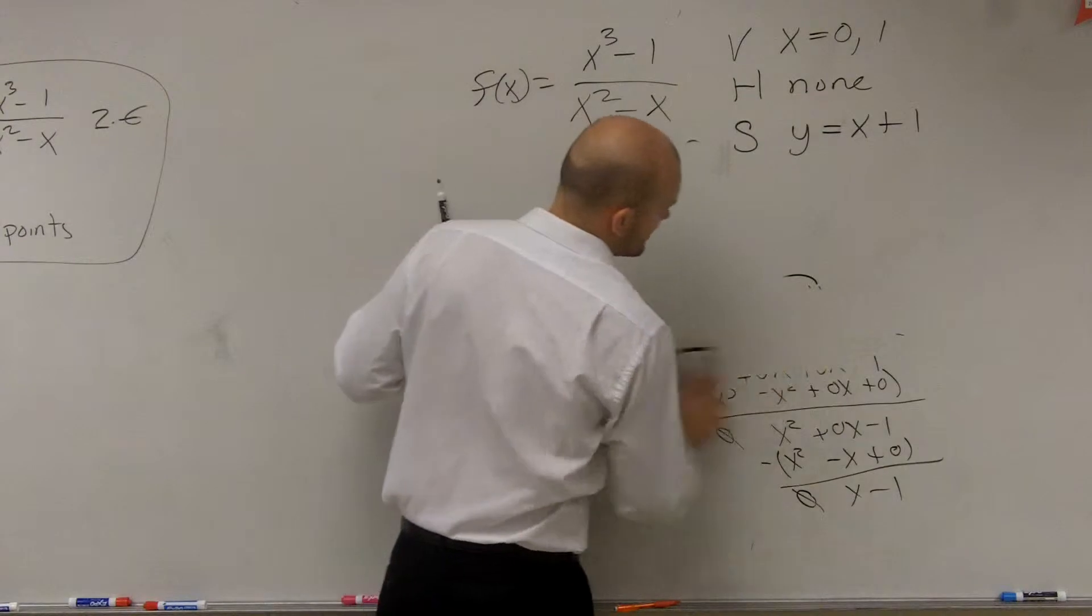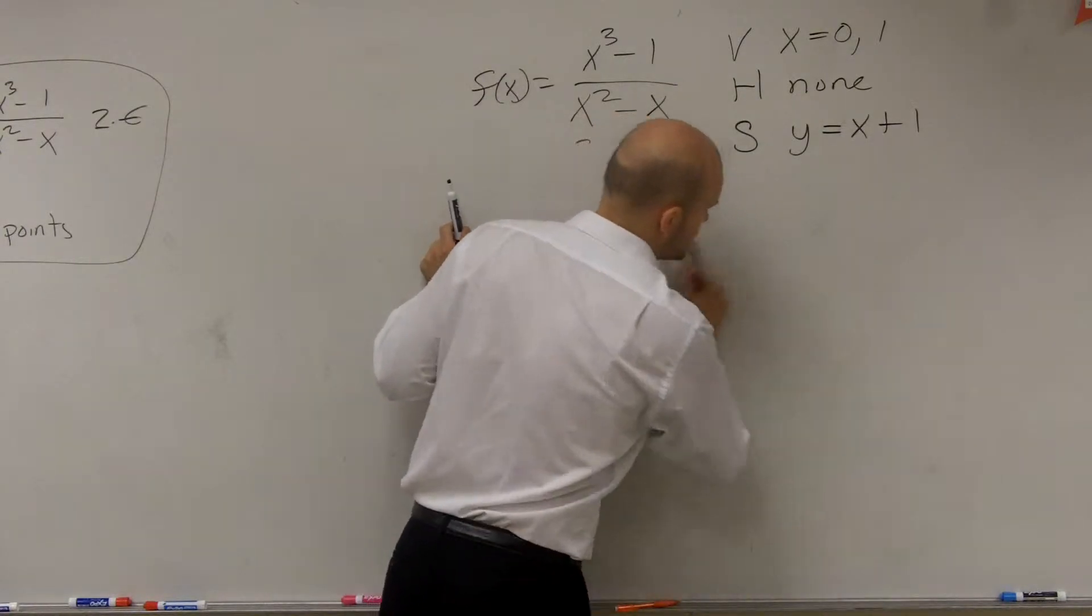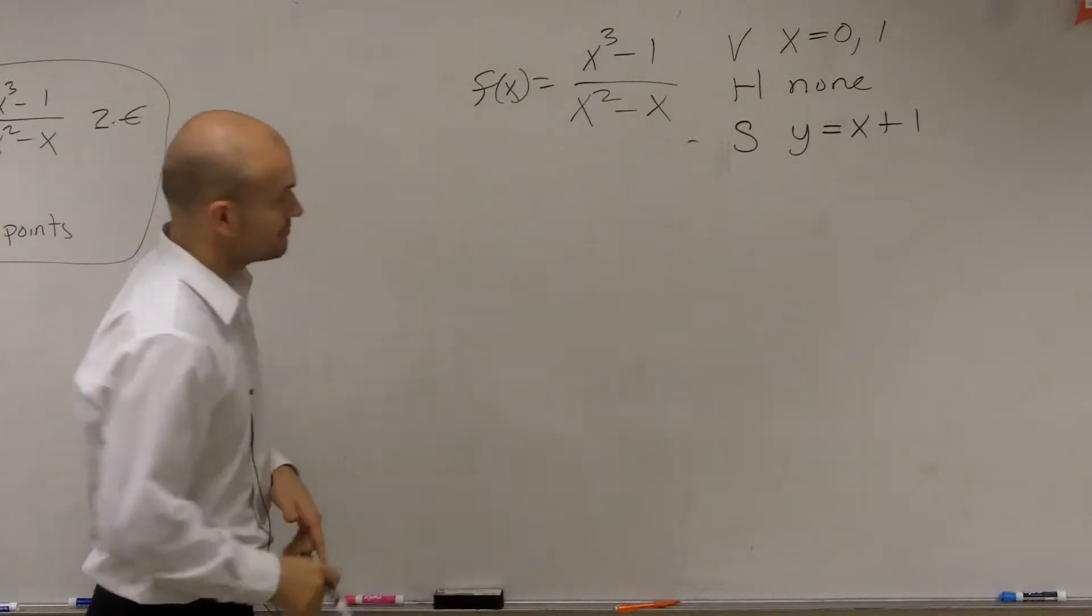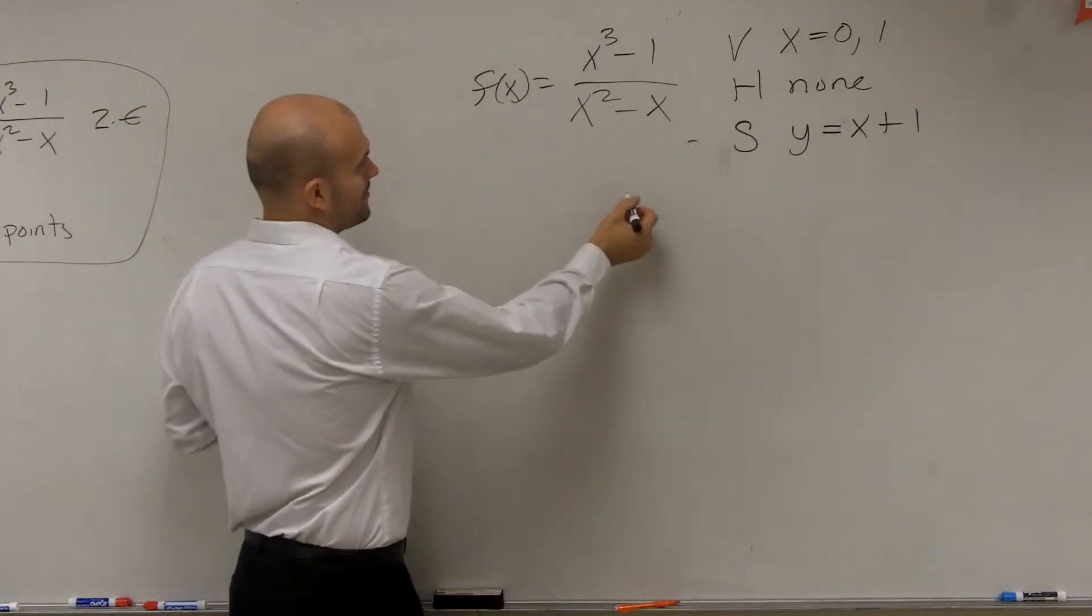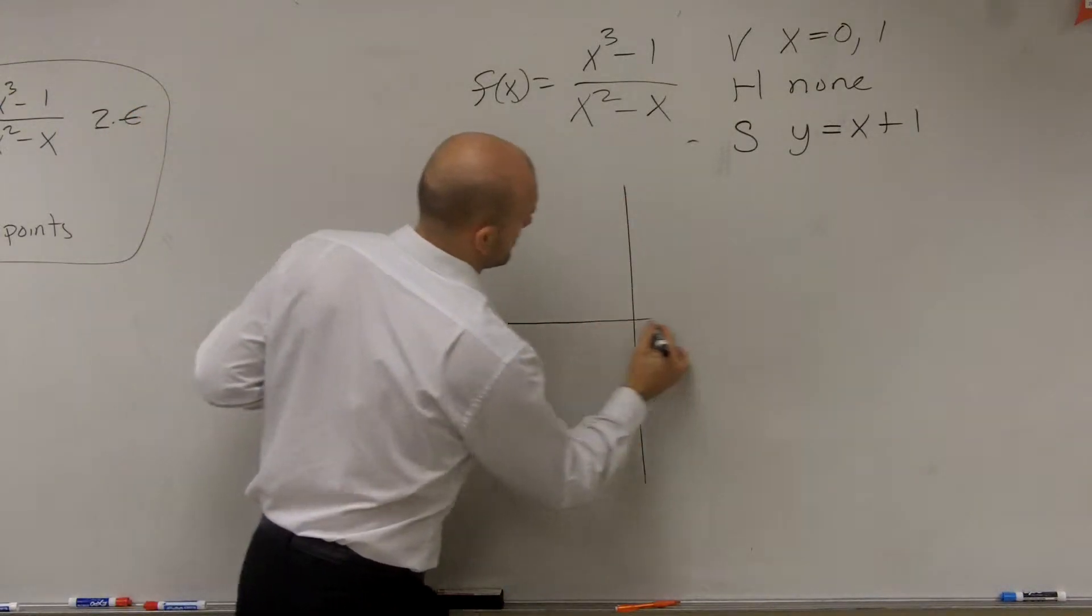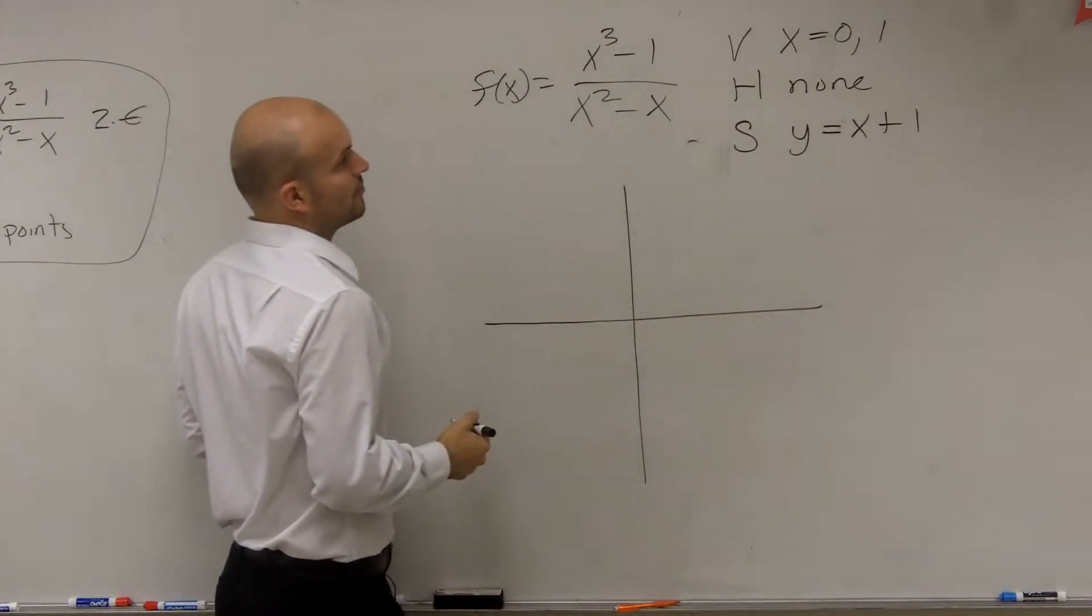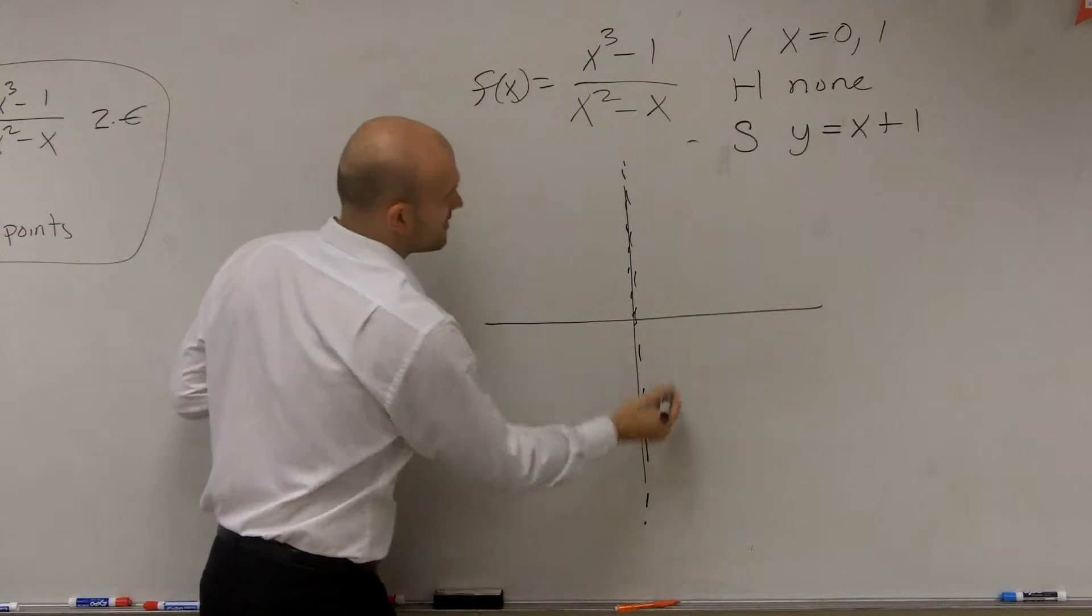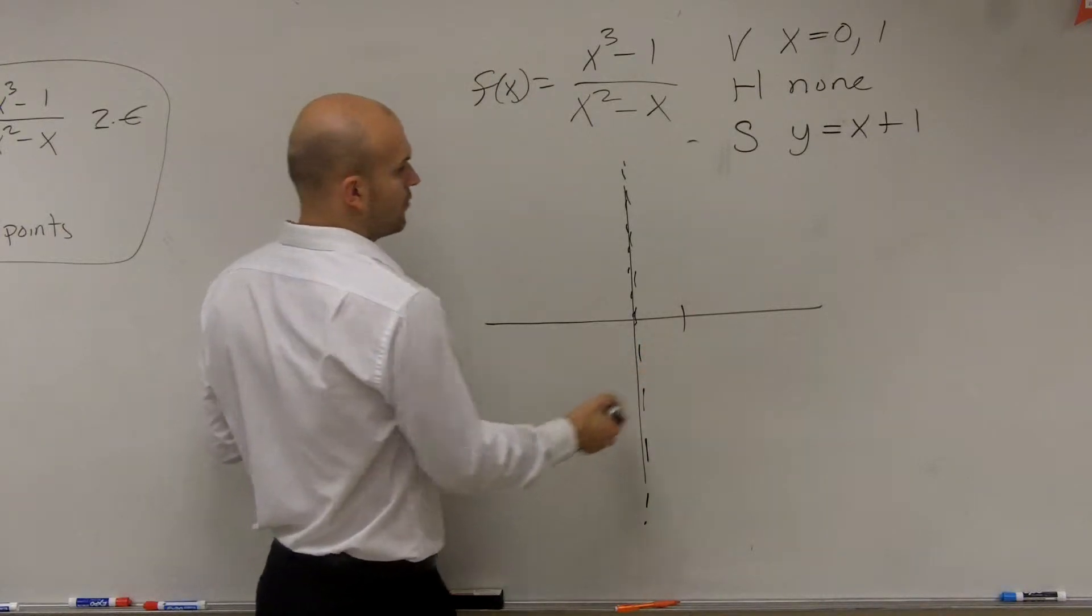Well, we know what our slant asymptote is, and we know what our vertical asymptote is. So we have a vertical asymptote. Our vertical asymptote is at 0. Then we have a vertical asymptote at 1.